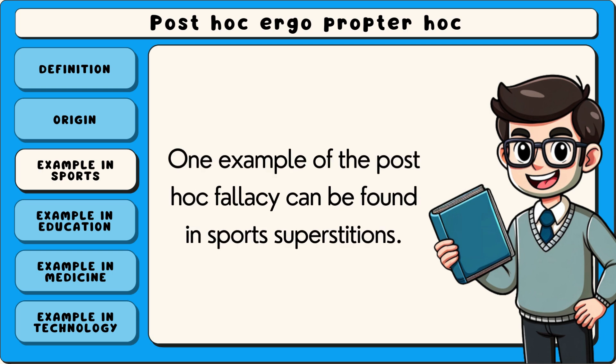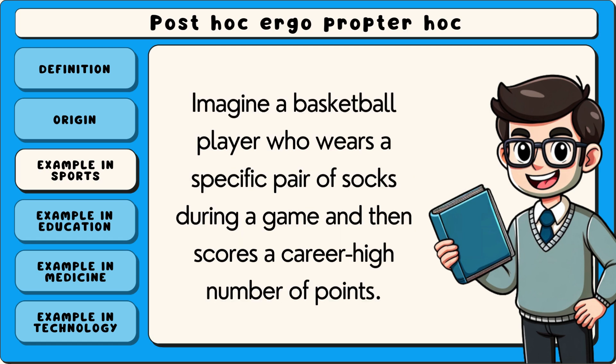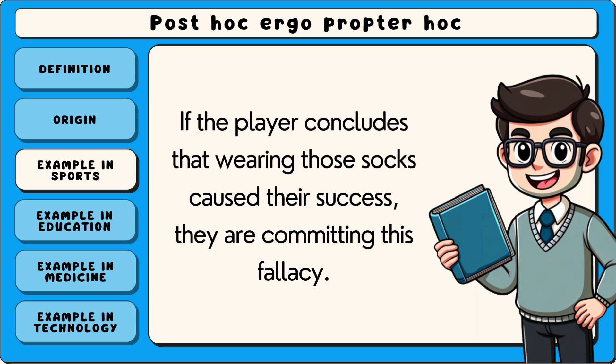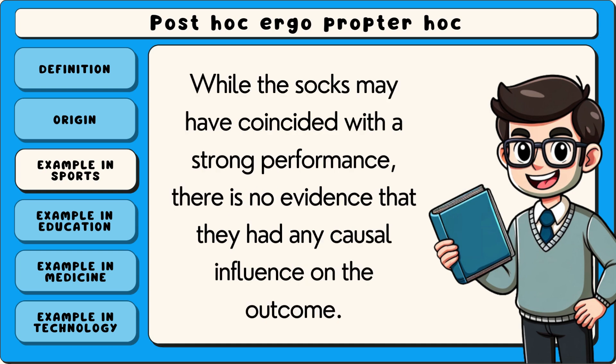One example of the post hoc fallacy can be found in sports superstitions. Imagine a basketball player who wears a specific pair of socks during a game and then scores a career-high number of points. If the player concludes that wearing those socks caused their success, they are committing this fallacy. While the socks may have coincided with a strong performance, there is no evidence that they had any causal influence on the outcome.